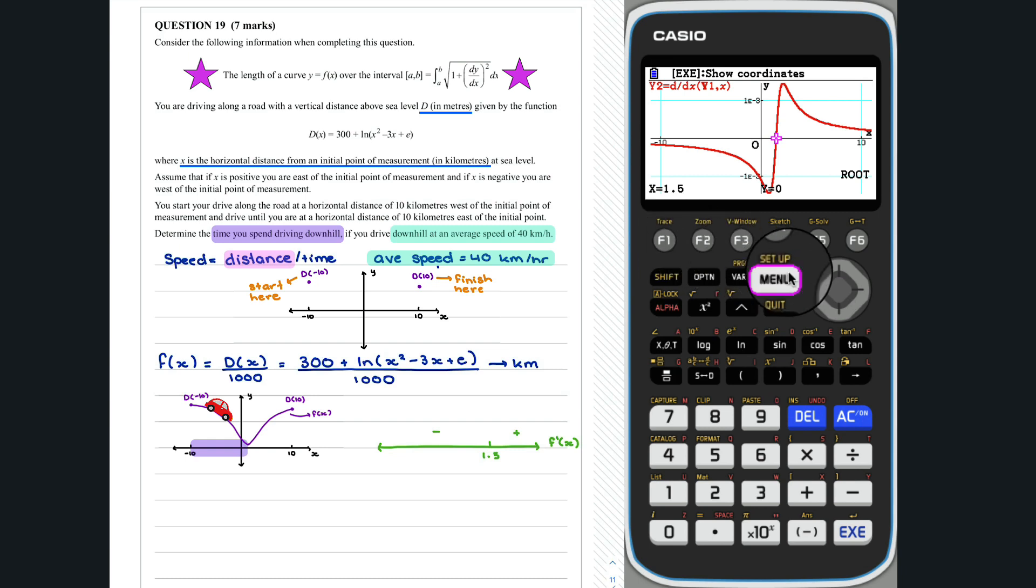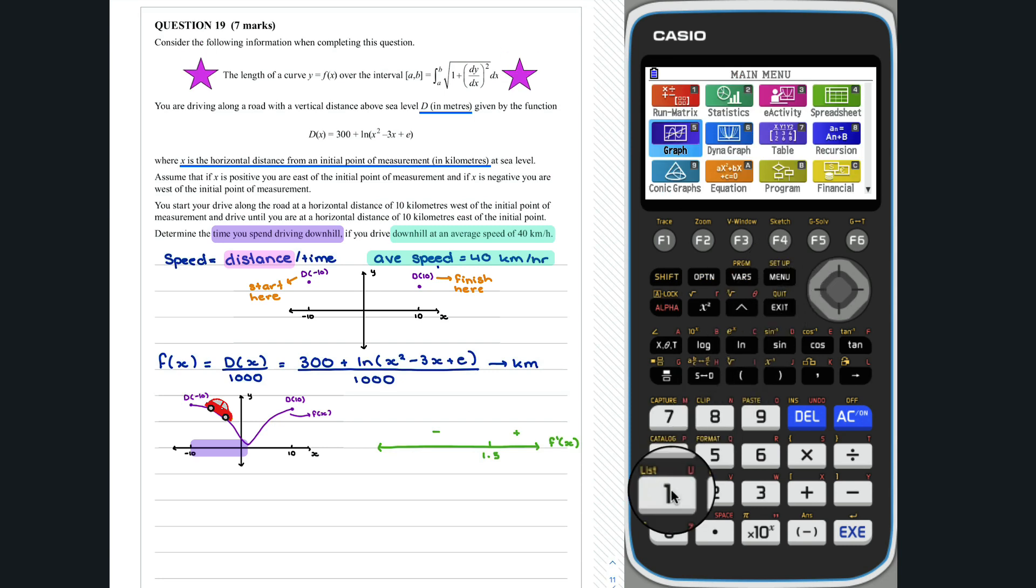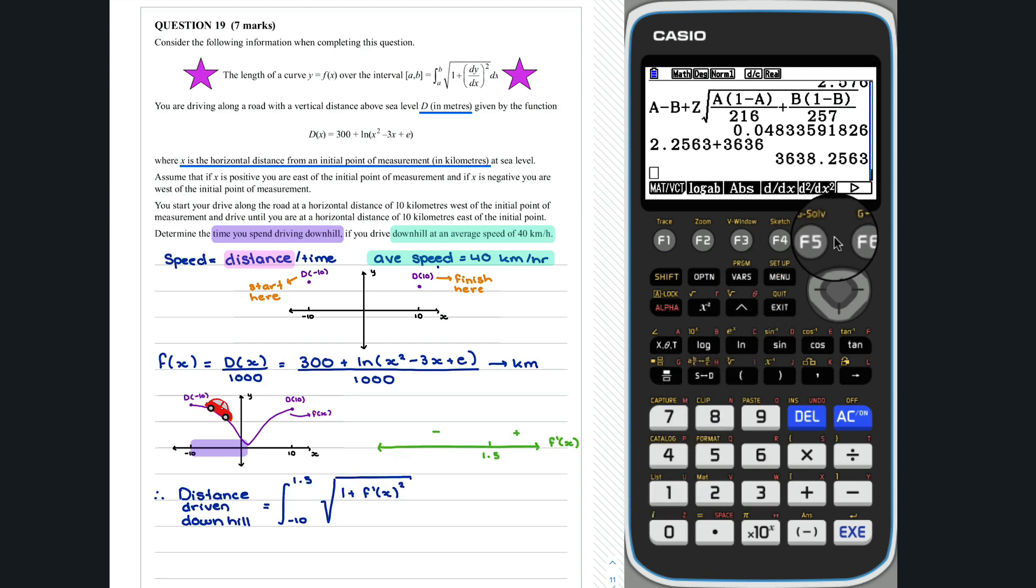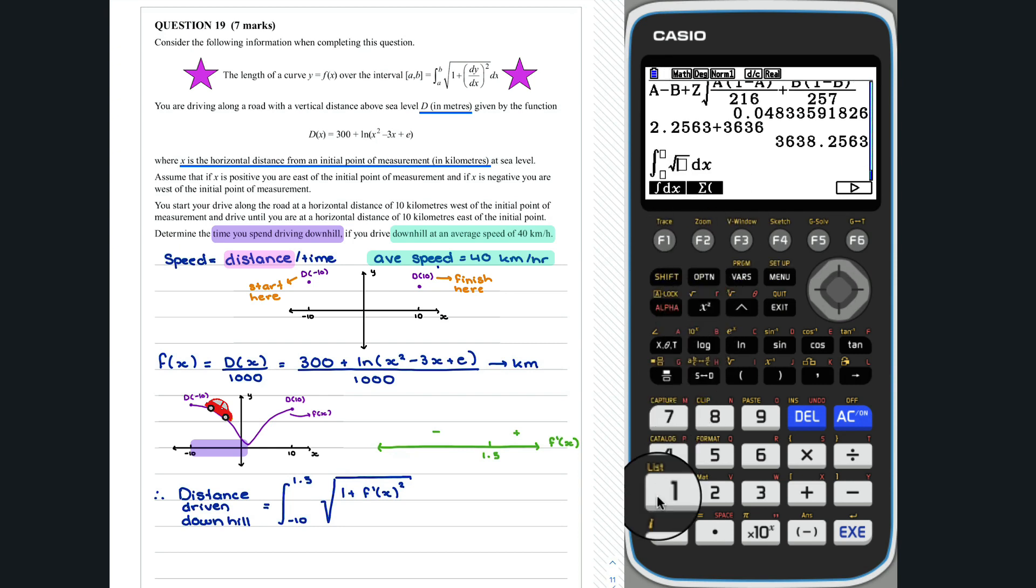We can now determine how far we drive downhill using the length of the curve formula that was supplied in the question. We need to calculate. We can calculate this in the run mode. Instead of manually typing in f dash of x, we can make use of where we typed it in in the graph menu. To enter in our derivative, we go vars, graph, and y, in our case, 2.